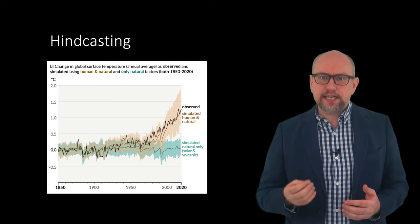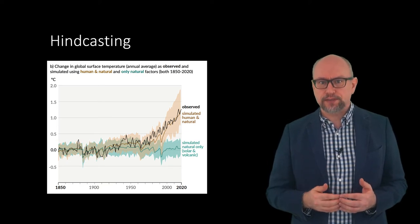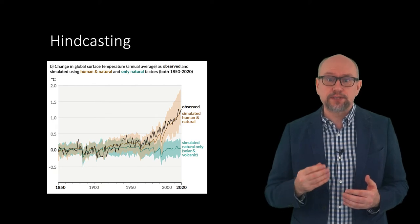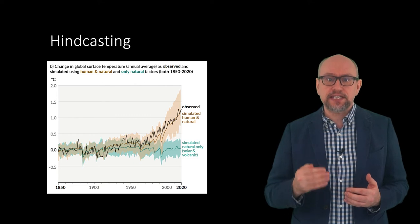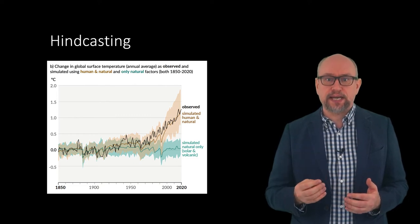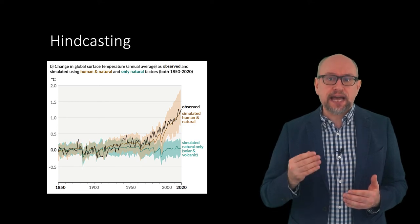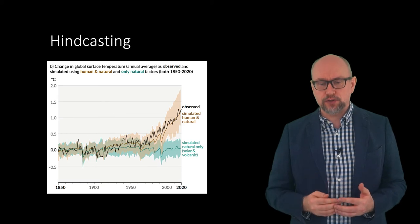We have already seen the graphs of model calculations from the sixth assessment report. The figure here shows that there is good agreement with the observed temperature record and further makes the case that the increase in temperature can only be explained by anthropogenic forcings. Most importantly, the increasing atmospheric burden in greenhouse gases due to the burning of fossil fuels.